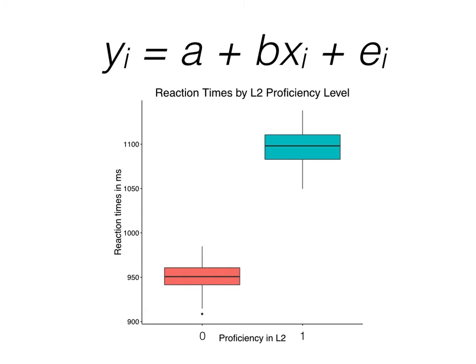To further show how this is similar to our continuous predictor example, let's remove the boxes so now it's just the data points. And also, let's remove the colors.